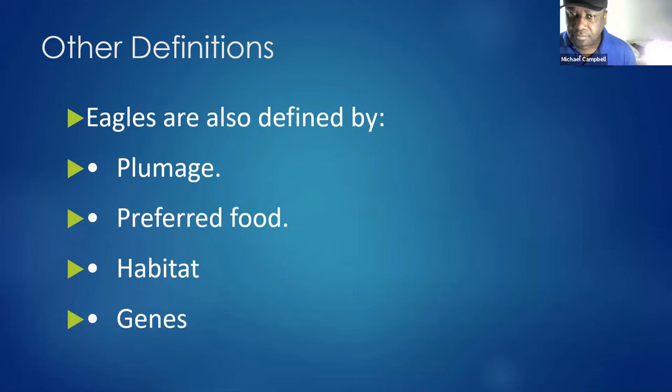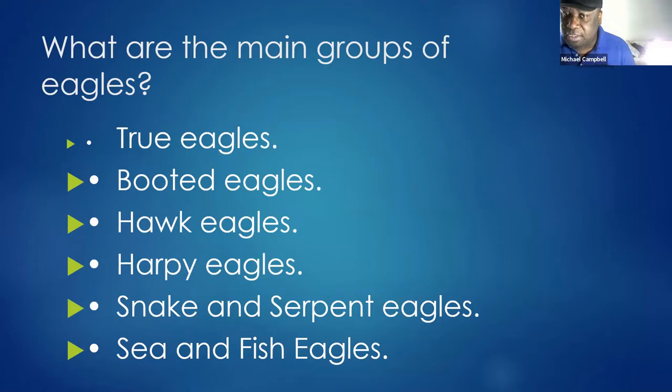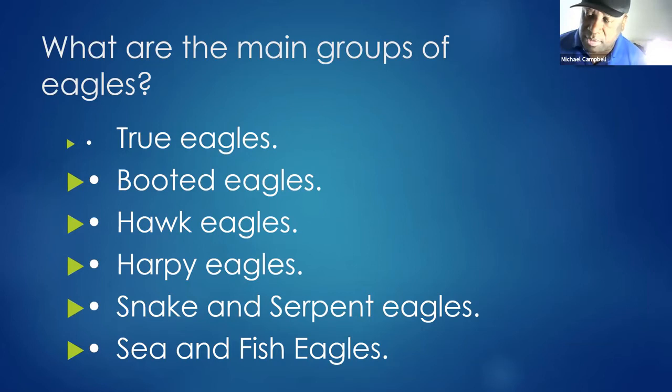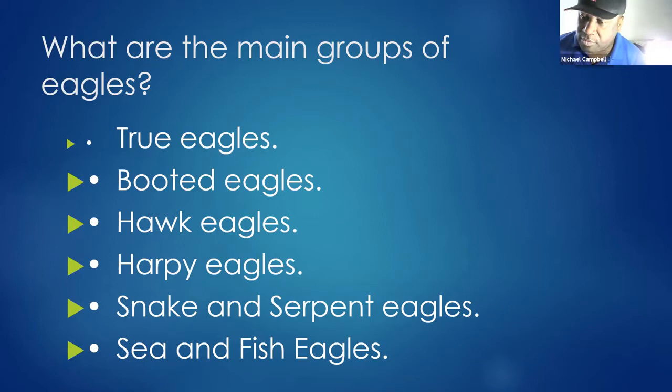These are the main groups of eagles: true eagles like the golden eagle, which fall within booted eagles — booted meaning feathers go all the way to their feet. Hawk eagles are the largest group, large to medium-sized eagles usually with crests found on all continents. Then the harpy eagles are very large. Snake and serpent eagles eat reptiles and lizards. Sea and fish eagles eat fish. These are the six main categories currently used for definitions.